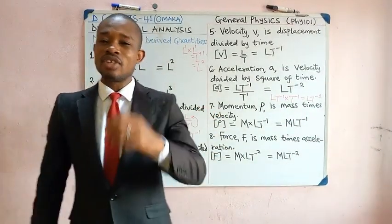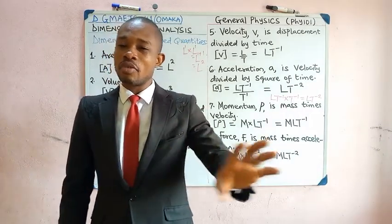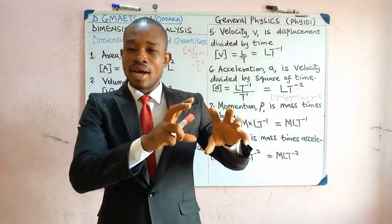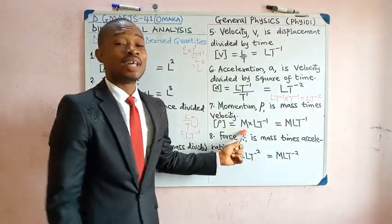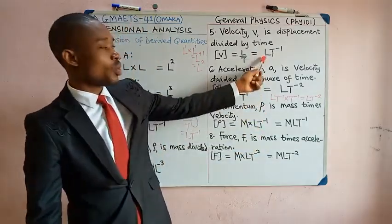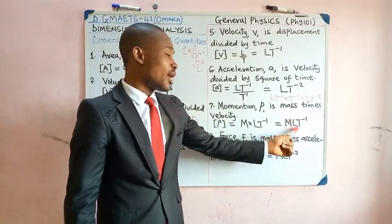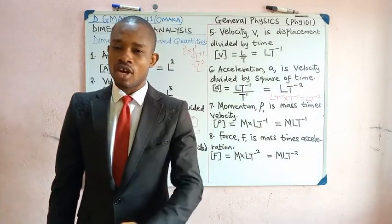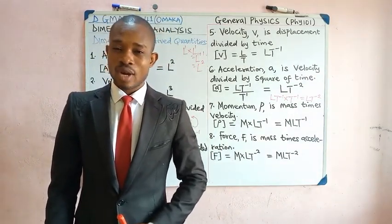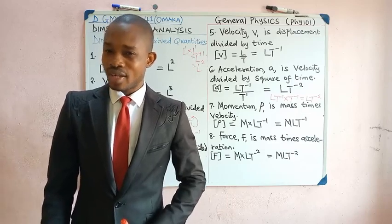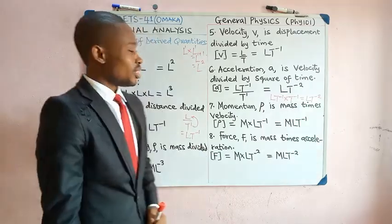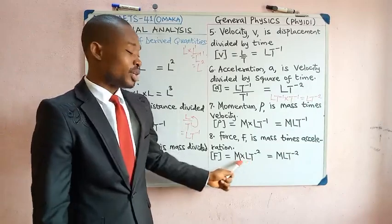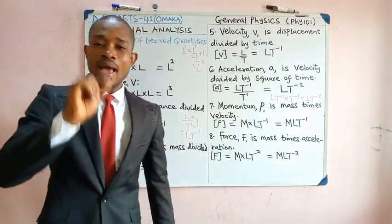Momentum by definition is the product of mass and the velocity of the object — mass times velocity. So the dimension of momentum is the dimension of mass times the dimension of velocity: M × LT⁻¹ = MLT⁻¹. For force, defined as mass times acceleration, the dimension is M × LT⁻² = MLT⁻².